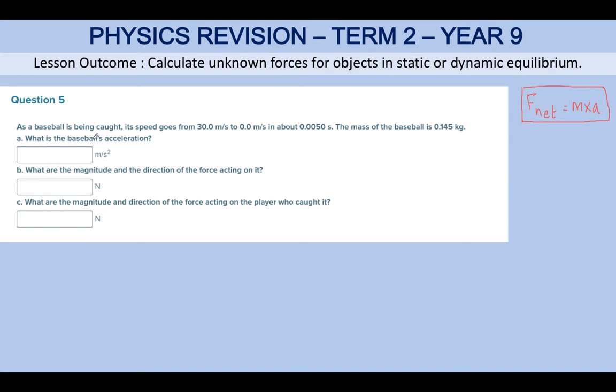Let's read the question. As the baseball is being caught, its speed goes from 30 m/s to 0.0 m/s in about these many seconds. The mass of the object is given to you.